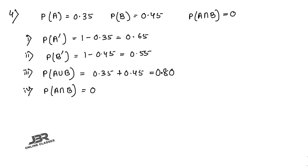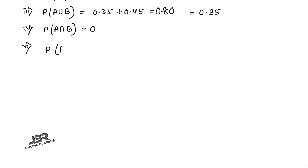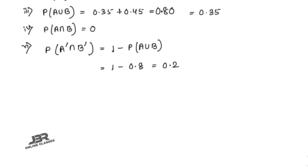Continuing problem four: (4) P(A∩B) = 0, because mutually exclusive. (5) P(A∩B complement) = P(A) − P(A∩B) = 0.35 − 0 = 0.35. (6) P(A complement ∩ B complement) = 1 − P(A∪B) = 1 − 0.8 = 0.2.